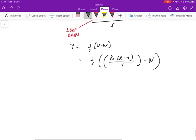And then if we move stuff around and rearrange it, we get Y equals [KI/(S² + KI)]R minus [S/(S² + KI)]W.